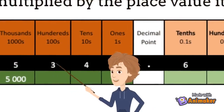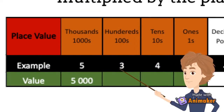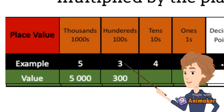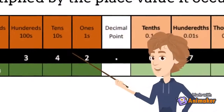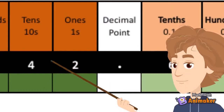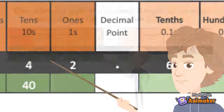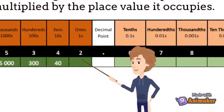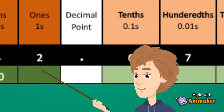The digit 3 is located in the hundreds place. Its place value is hundreds. To find the value of 3, 100 times 3 equals 300. The digit 4 is in the tens place. Its place value is tens. To find the value of 4, multiply 4 times 10 which is 40. The place value of 2 is 1, so to get the value of 2, multiply 1 times 2 which is 2.